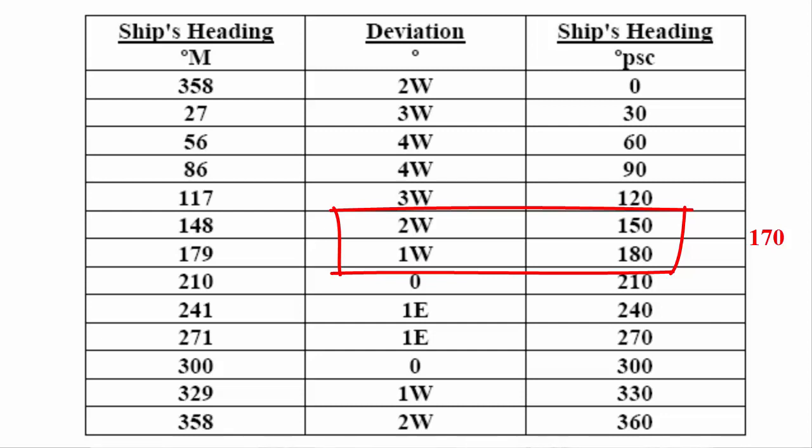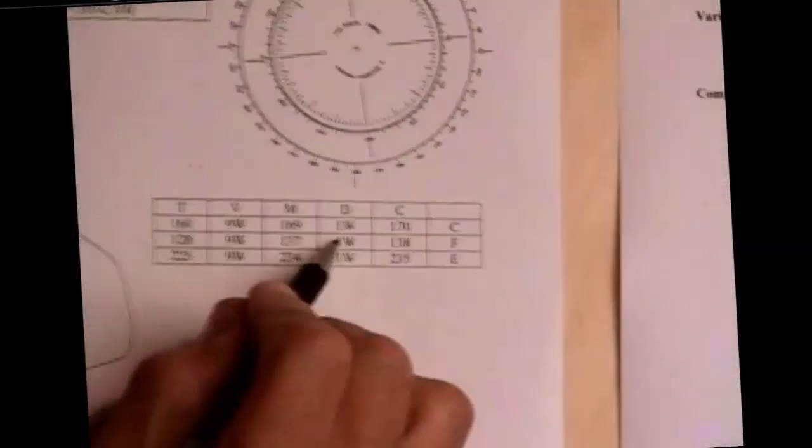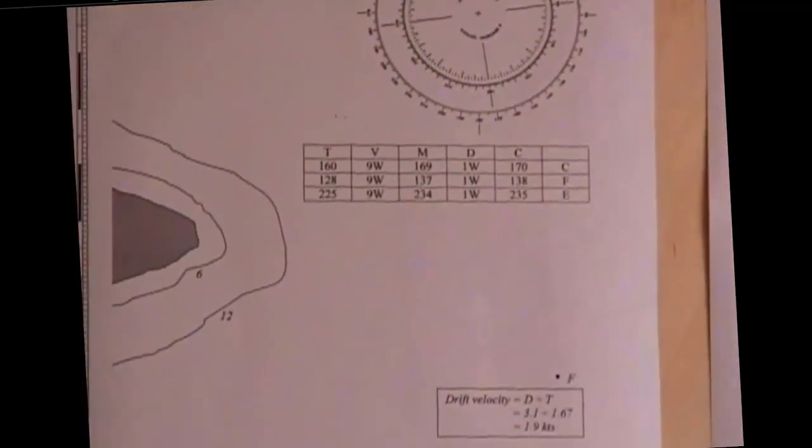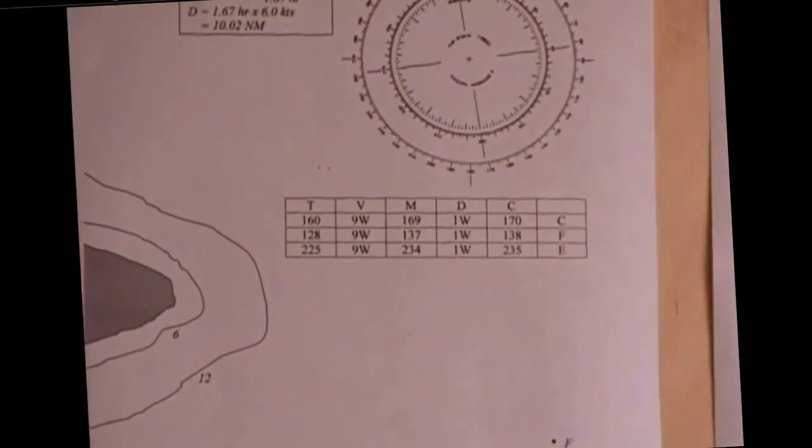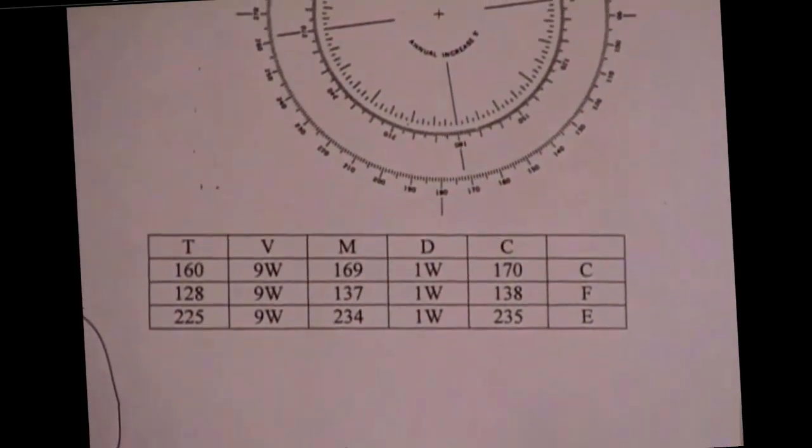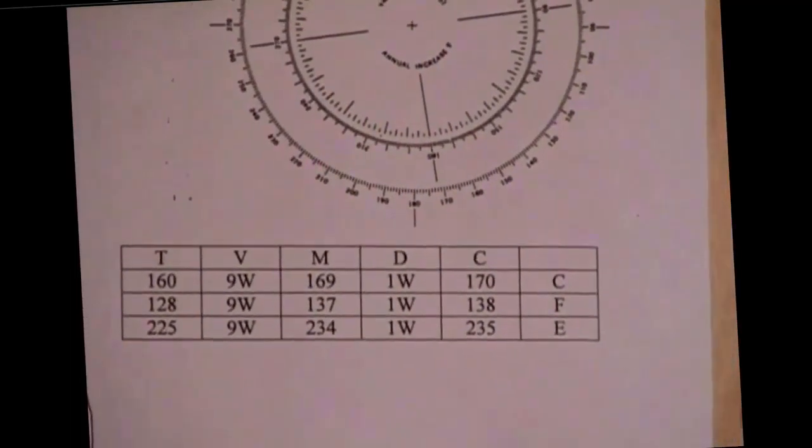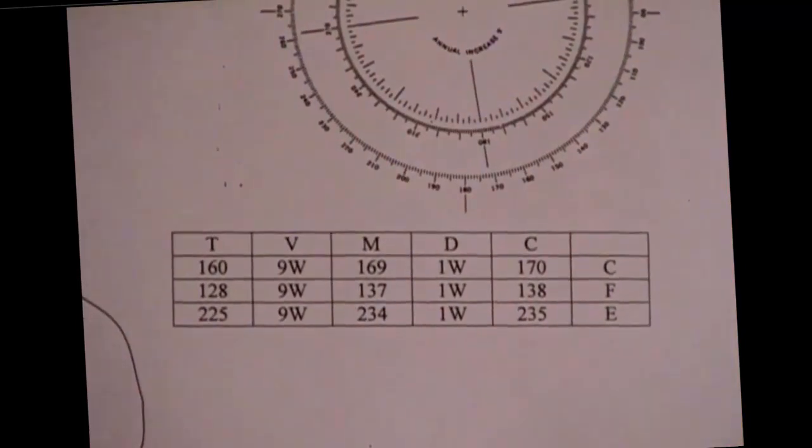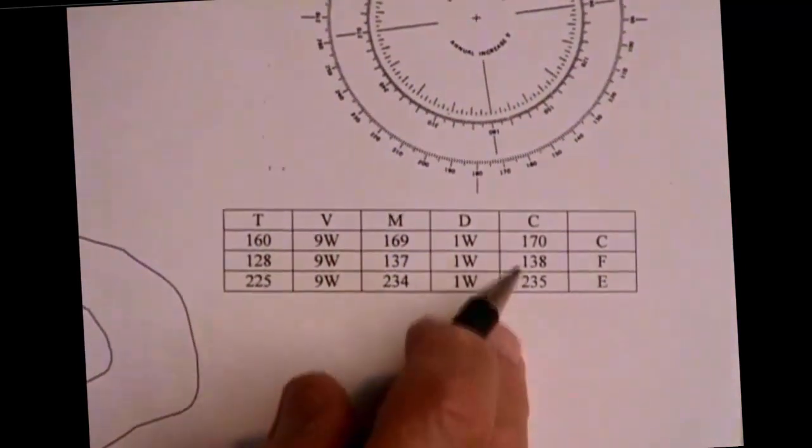One degree west is going to apply to all of these because throughout this entire course we're on the same heading. We haven't changed our heading, and deviation is dependent on boat heading. So we're going to use one west, and we can convert all of these PSCs to magnetic.